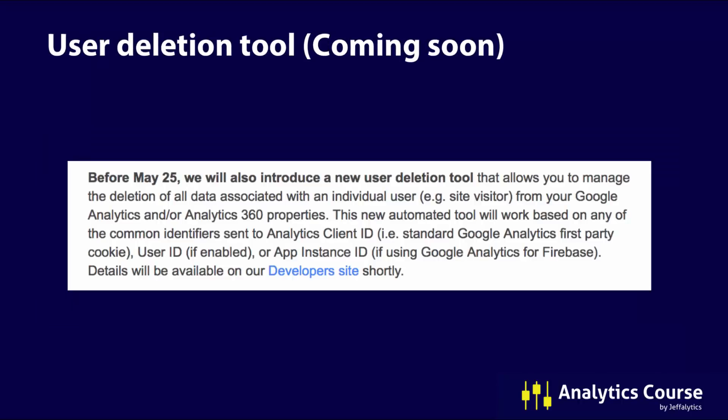There's also a user deletion tool. If you want to delete things like client ID, user ID, or if you're running apps, the app instance ID, you can delete people based on knowing who they are via user ID or client ID. So if you're merging people's data in the cloud — doing some of the things we talk about in analytics course or in our free YouTube videos — you might want to enable those features. You might want to use user ID or client ID for cross-device tracking, but there is a downside: sometimes people don't want to be tracked across their devices, so you need to give them the ability to delete that ID so that their data is no longer merged.